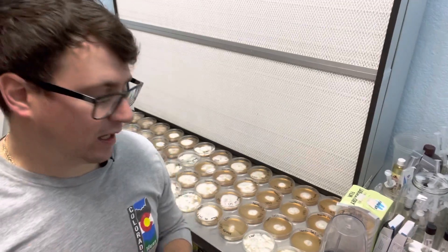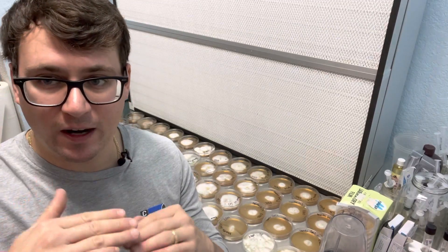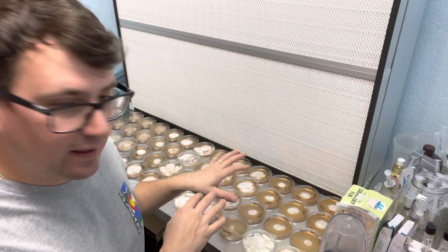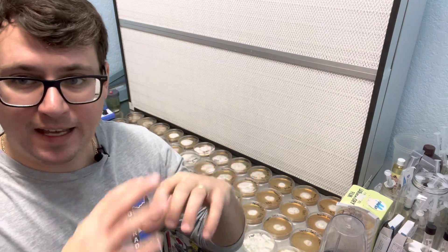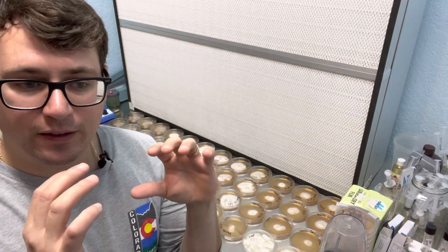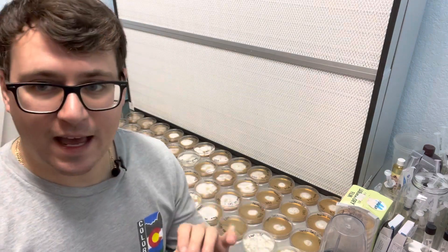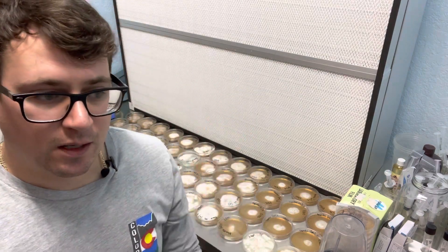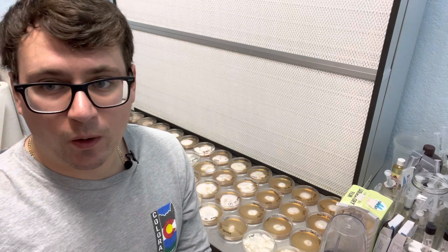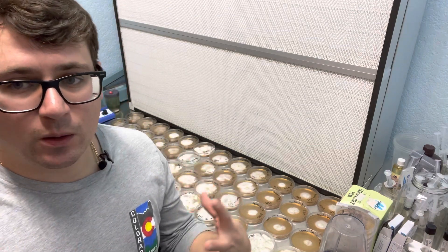Condensation happens when there's a temperature variance between the surface of the agar and the outside of the petri dish. Usually it happens on the lids when the dishes are too warm and the room is too cold.